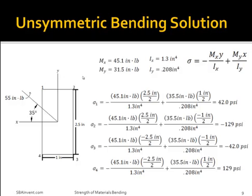Now that I know what the moments and area moment of inertia are, I can solve for the stresses on the corner. First, I need to determine the distance from the centroid in the x-direction and in the y-direction, realizing that x is positive in this direction and y is positive going in this direction. At corner 1, both x and y are positive, so my stress at corner 1 would be 42.0 PSI. At corner 2, the stress is negative in the x-direction but remains positive in the y-direction, which changes the stress value to negative 129 PSI. For corner 3, both x and y are negative, so my stress results as negative 42 PSI. And for corner 4, my stress is negative in the y-direction but positive in the x-direction, giving me a stress value of 129 PSI.